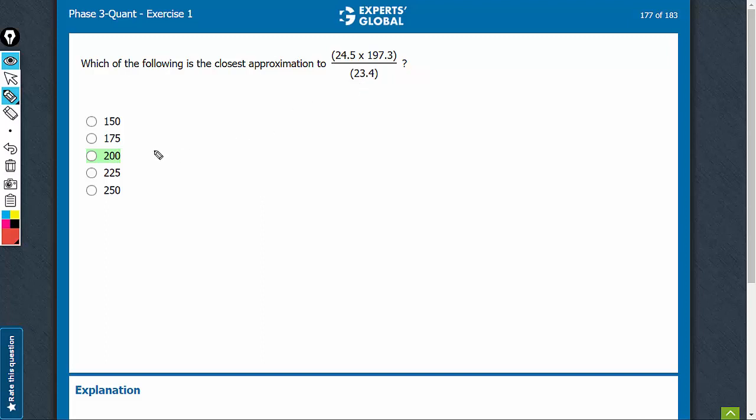We have to go for approximation. The values are fairly close, so we cannot be very casual about this. We have to have a fair approximation.